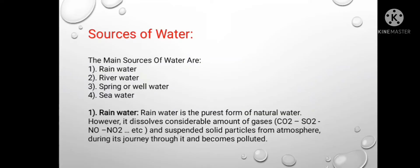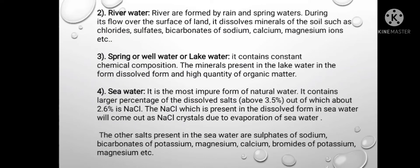Rain water becomes polluted by suspended solid particles from the atmosphere during its journey through it. River water — rivers are formed by rain and spring waters. During its flow over the surface of land, it dissolves minerals of the soil such as chlorides, sulphates, and bicarbonates of sodium, calcium, magnesium ions etc.